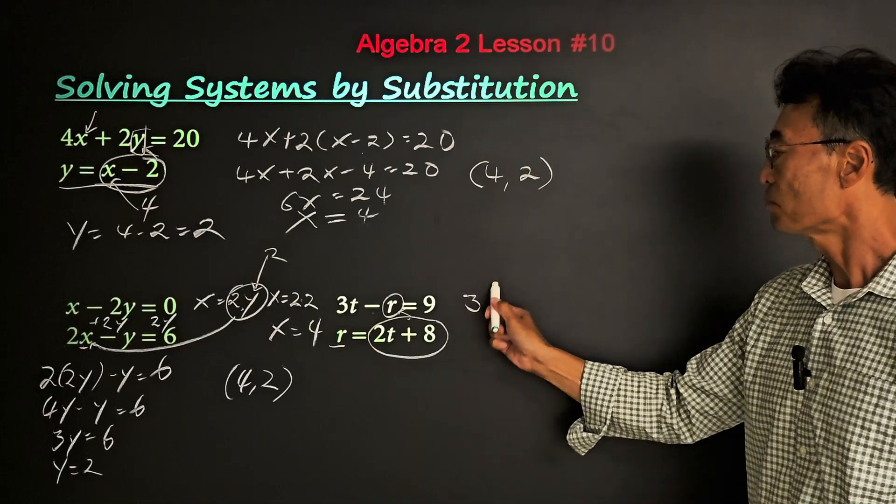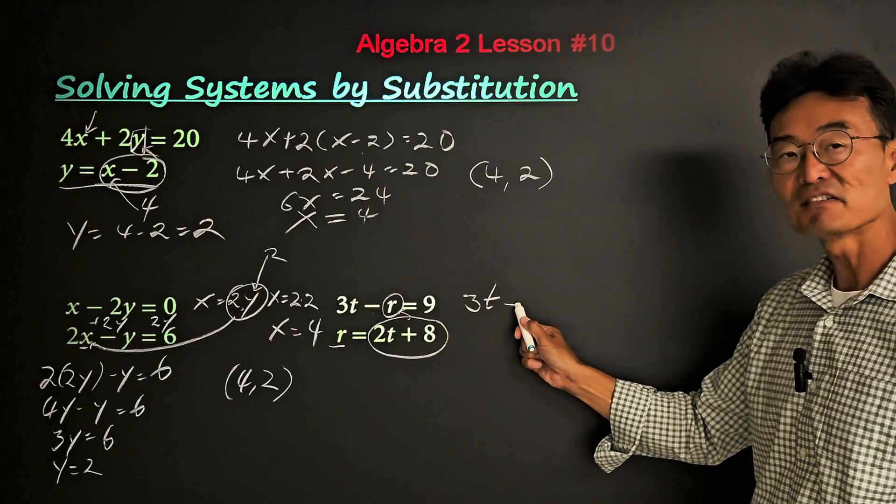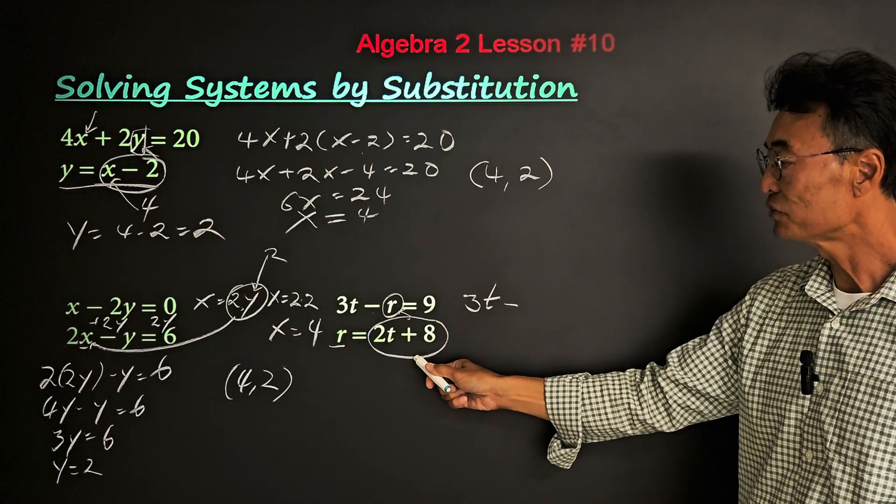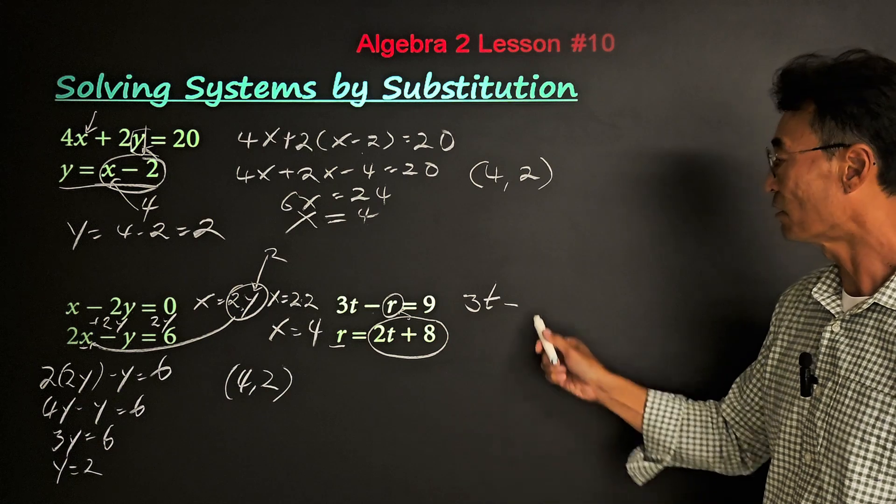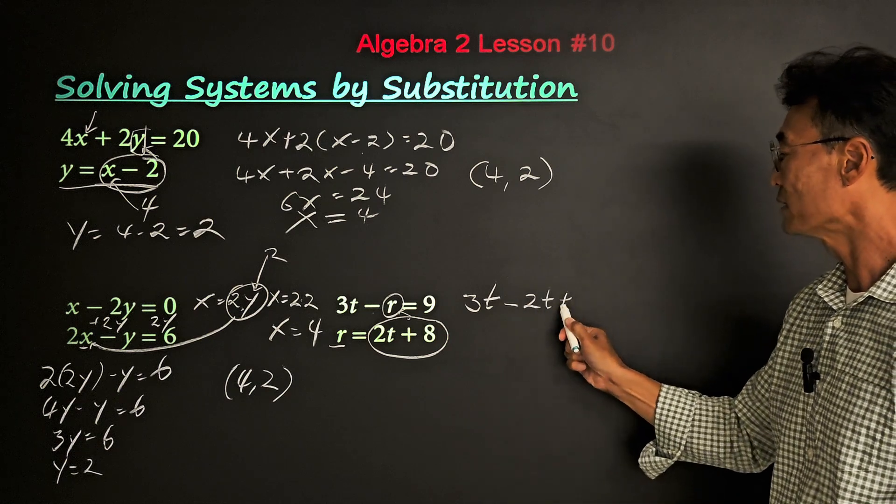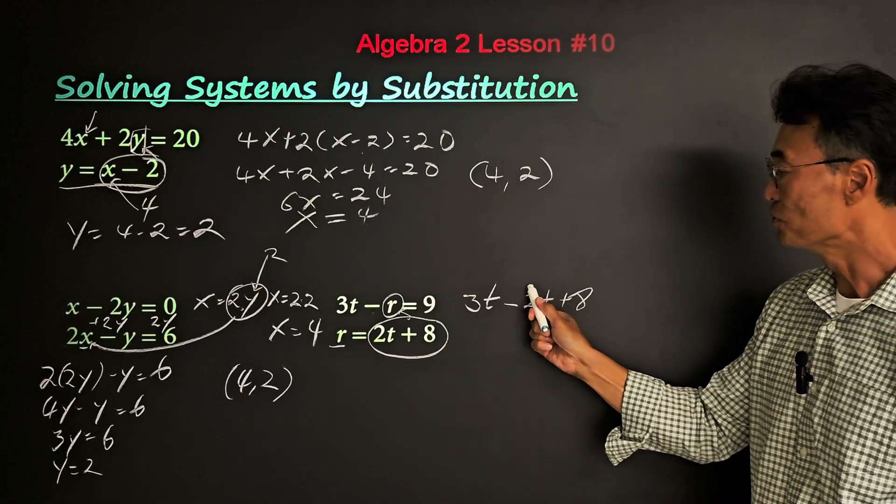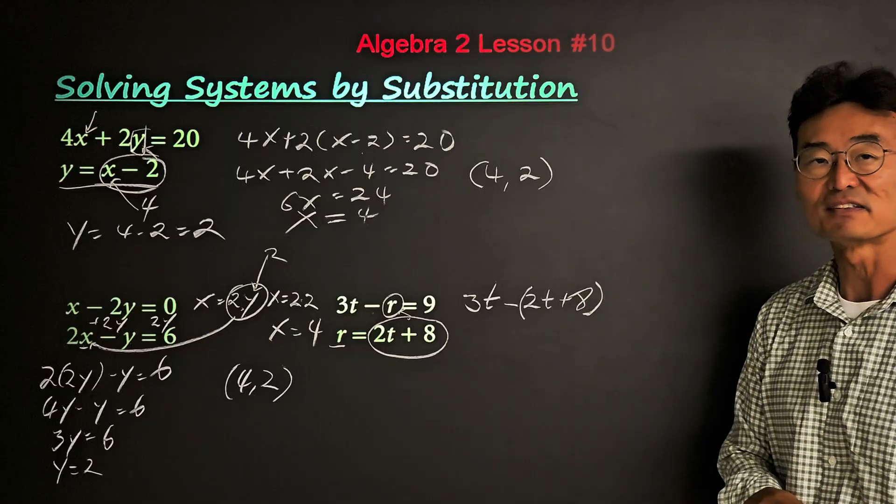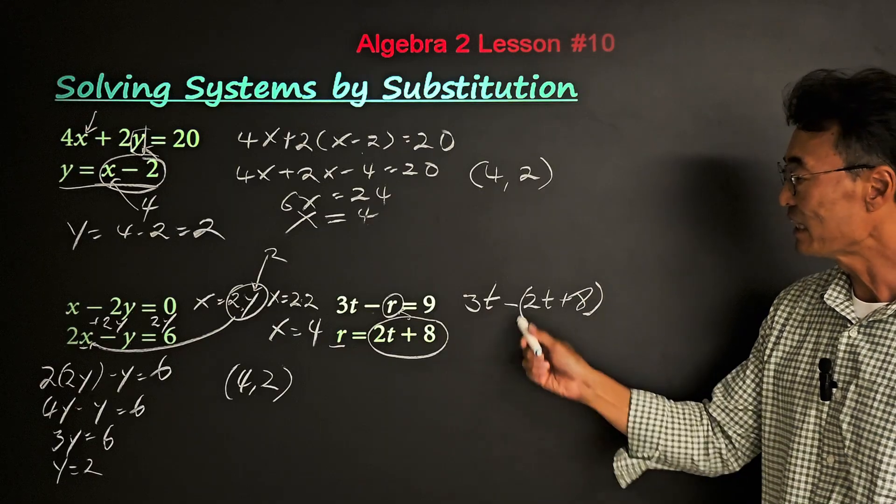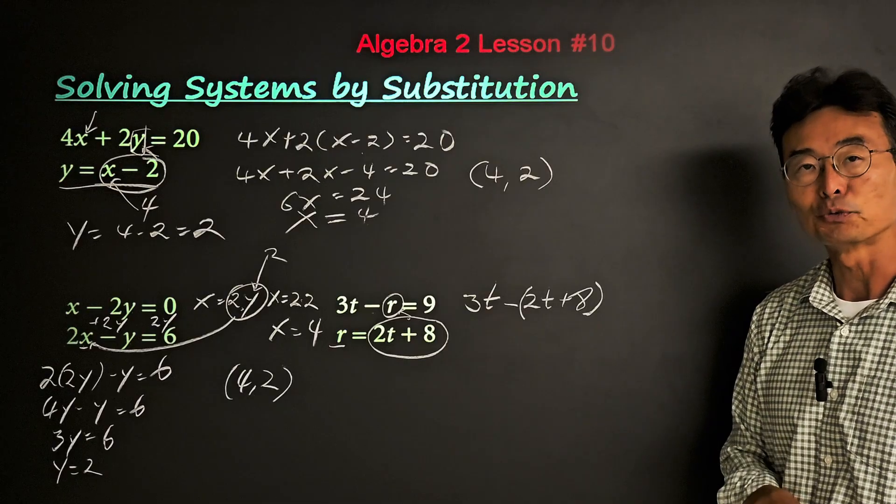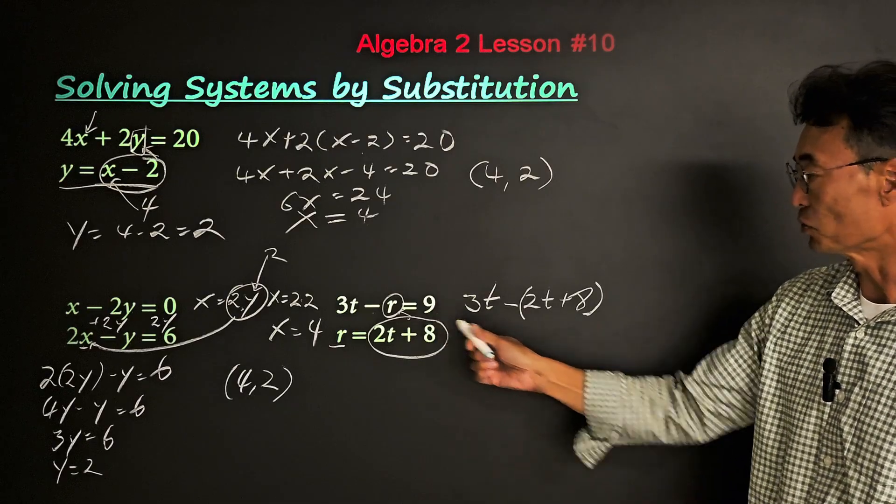We'll start by saying 3t minus, and then if we simply take that 2t plus 8 and replace the r, you might be tempted to write it like this. This will give you the wrong answer. What you have to do is you must put parentheses around 2t plus 8 and then apply or distribute the negative sign, which equals 9.